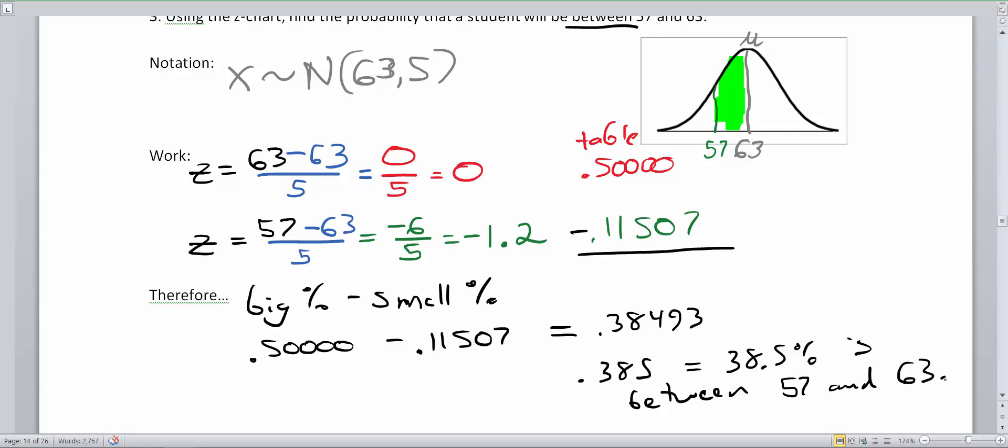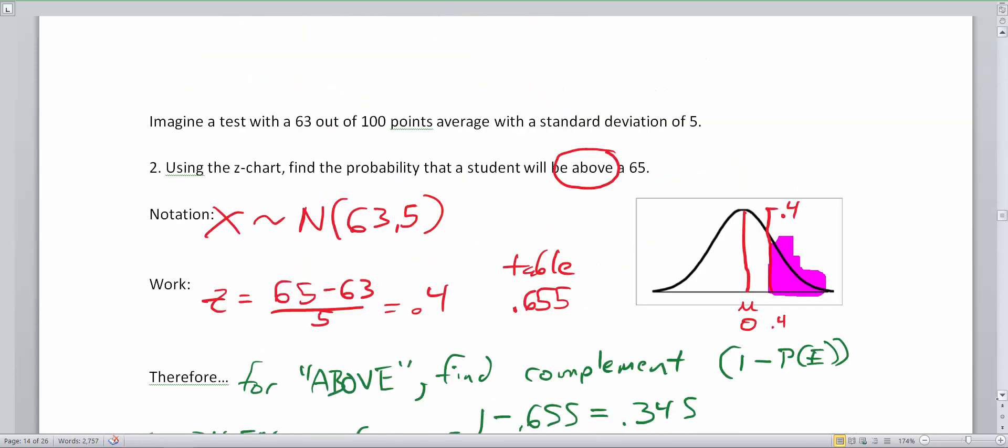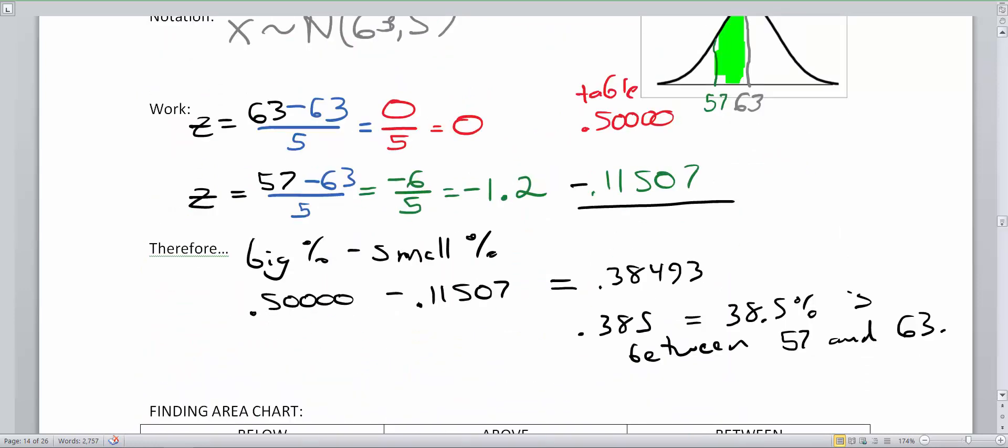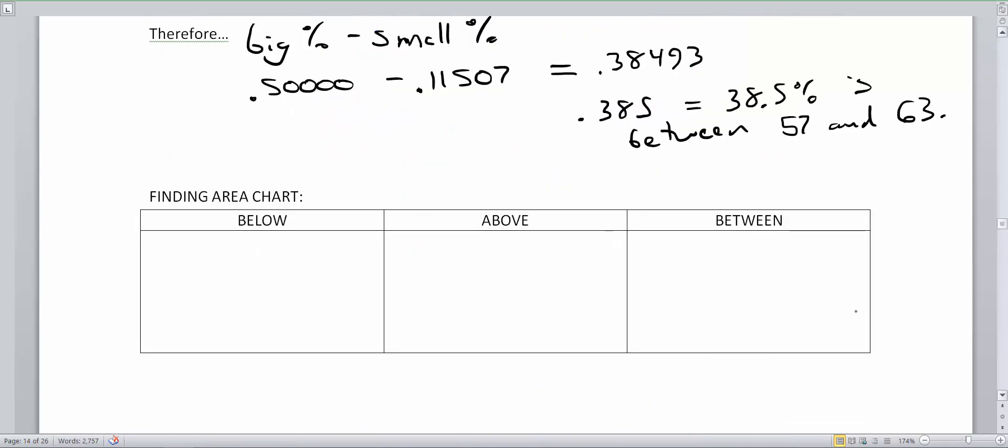So now you've had an example of above, below, and between, guaranteed to be on the next homework. What's kind of nice is at the bottom of this worksheet here I've made for you a little area chart table. What do you do if you have a problem that asks for below a z-score? Well, just convert into a percentile, and then you're done.